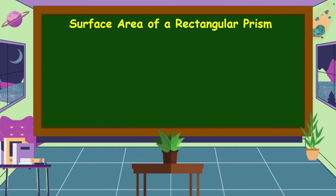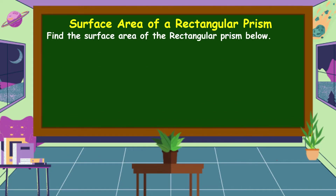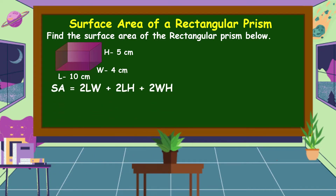Next, we're going to discuss the surface area of a rectangular prism. Find the surface area of the rectangular prism below with a length of 10 cm, width of 4 cm, and height of 5 cm. The formula is SA = 2LW + 2LH + 2WH, where L is the length, W is the width, and H is the height.